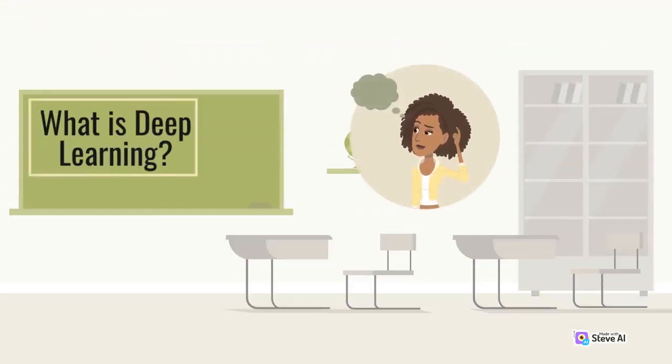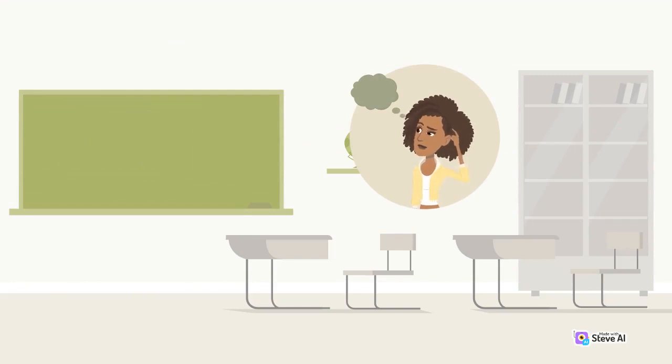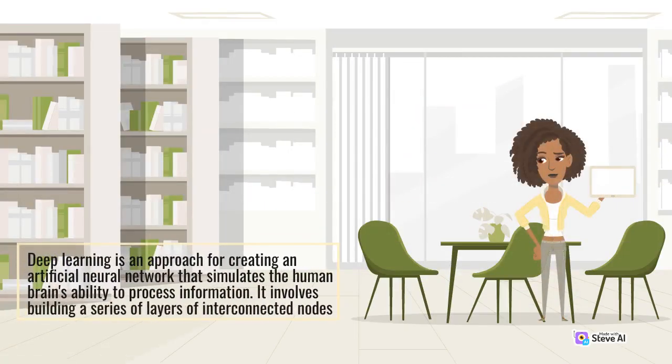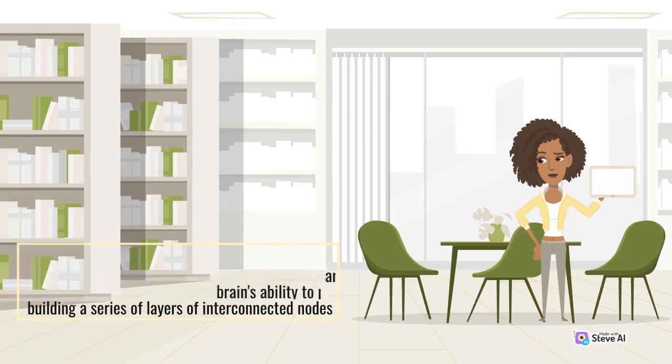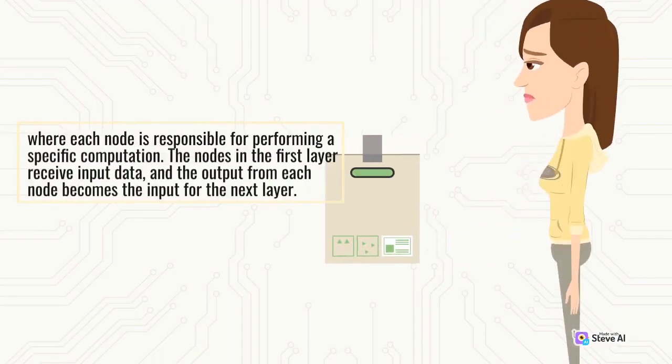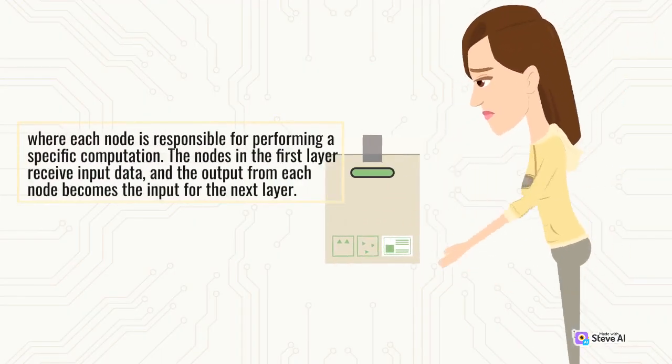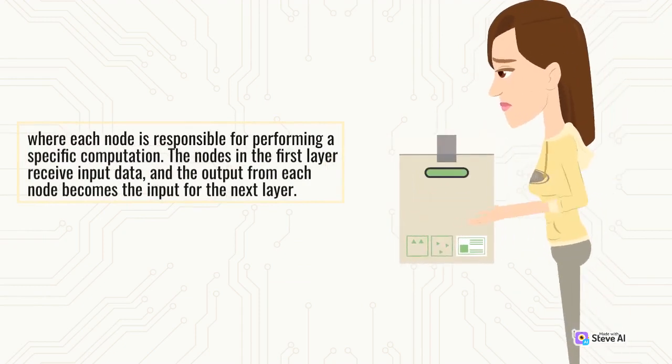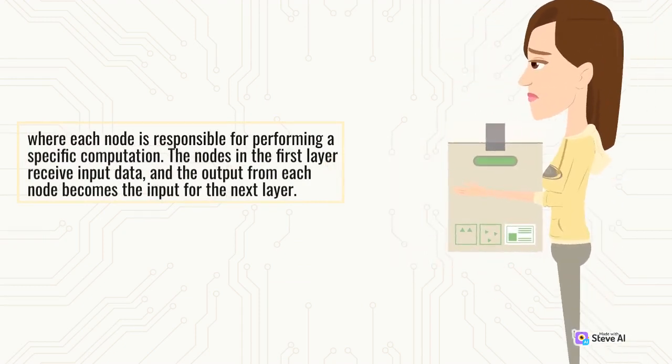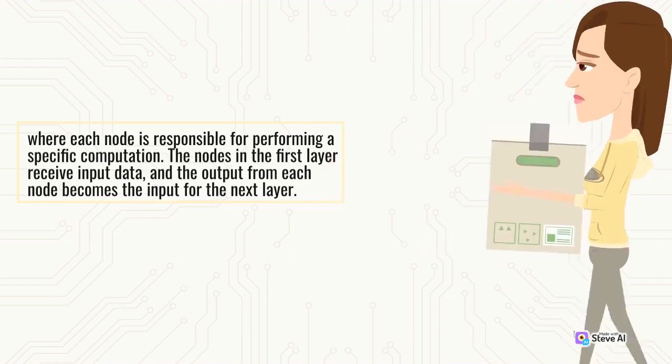Deep Learning is an approach for creating an artificial neural network that simulates the human brain's ability to process information. It involves building a series of layers of interconnected nodes, where each node is responsible for performing a specific computation. The nodes in the first layer receive input data, and the output from each node becomes the input for the next layer.